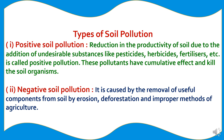There are two types of soil pollution. First, positive soil pollution: the reduction in productivity of soil due to the addition of undesirable substances like pesticides, herbicides, fertilizers, etc. These pollutants have a cumulative effect and kill soil organisms. Second, negative soil pollution: caused by the removal of useful components from soil by erosion, deforestation, and improper methods of agriculture.